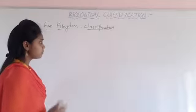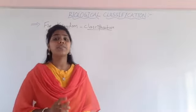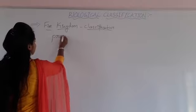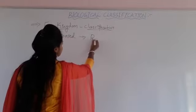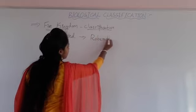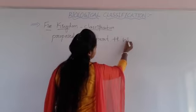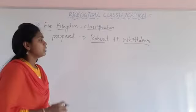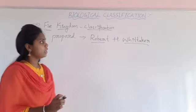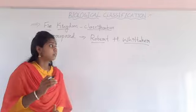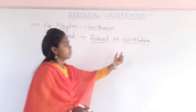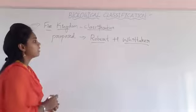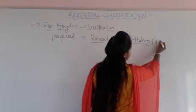The five kingdom classification was first introduced by the scientist R.H. Whittaker — that is, Robert H. Whittaker. Robert H. Whittaker proposed the five kingdom classification in the year 1969.